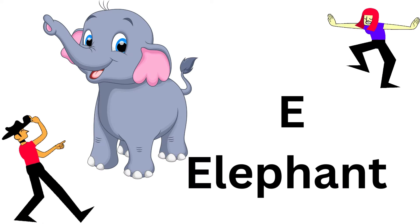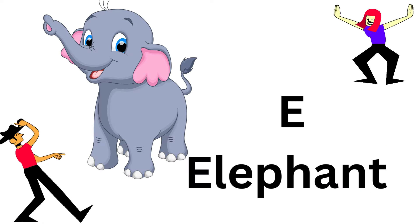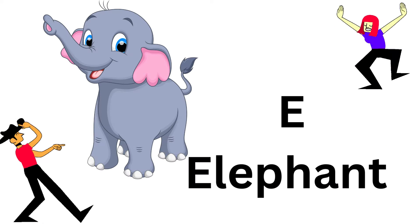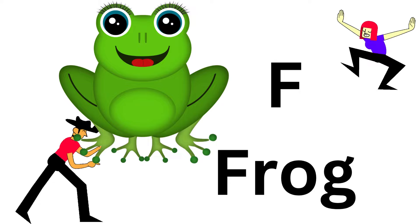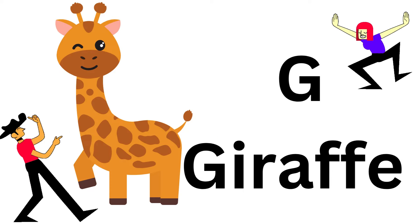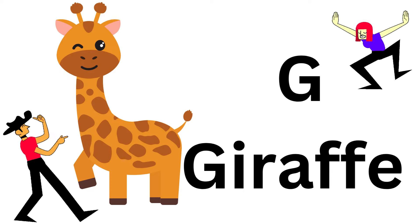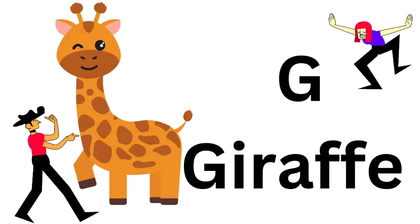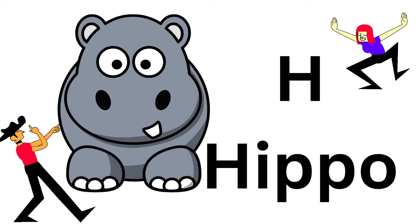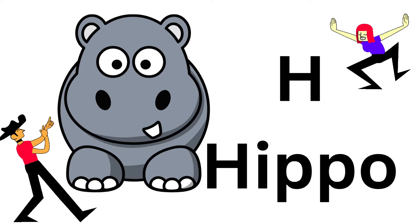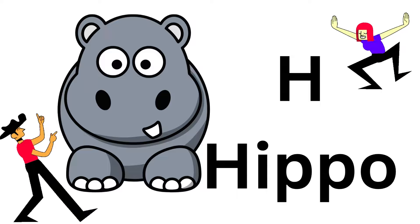E's for the elephant with a trunk so long. F's for the frog who sings a happy song. G's for the giraffe, tall and so grand. H's for the hippo in the river and sand. Ding, dang, dong.